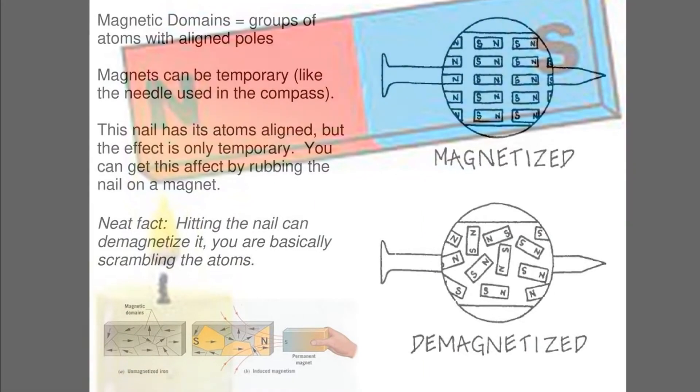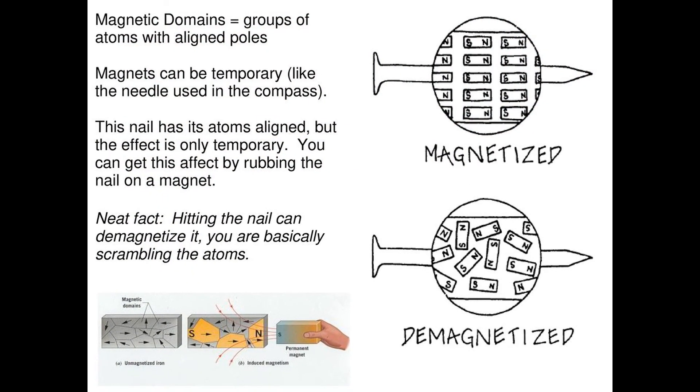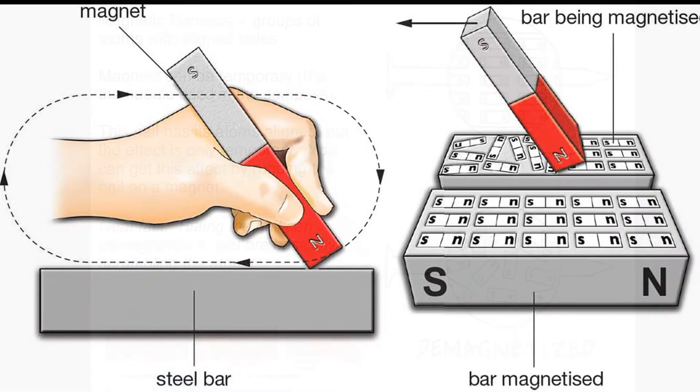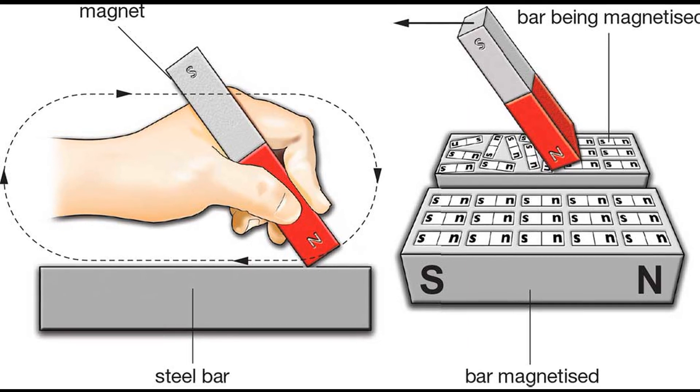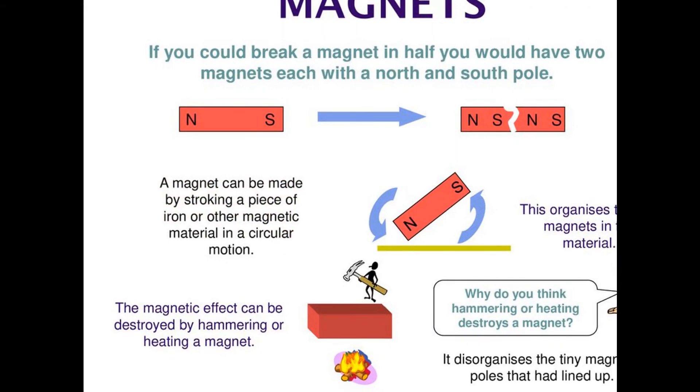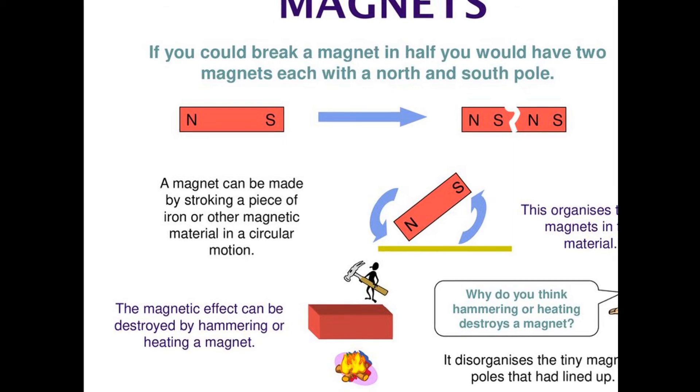In unmagnetized steel, the magnetic domains are jumbled. The north and south poles cancel each other out. Stroking steel with a bar magnet magnetizes the steel. The magnet pulls the domains in the same direction. Striking a magnet with a hammer shakes up the domains. Their like poles push apart and the steel loses its magnetism.